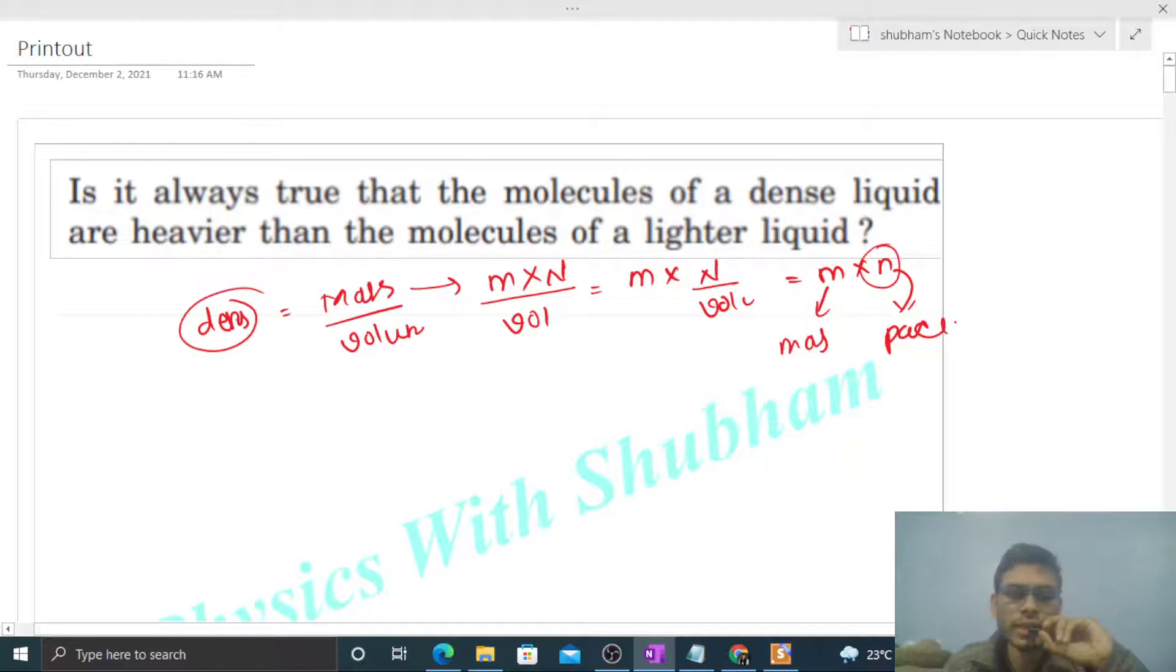So if you want higher density, then mass of the molecule needs to be more and number of molecules per unit volume also needs to be more. So let's compare two liquids, liquid A and liquid B.